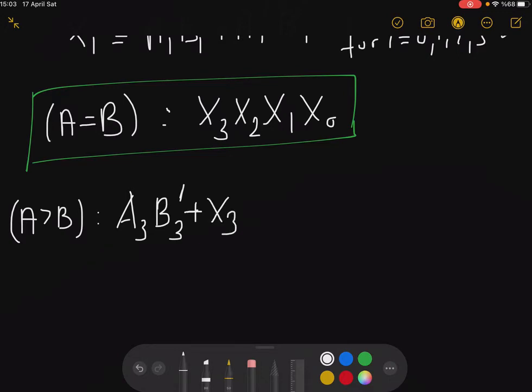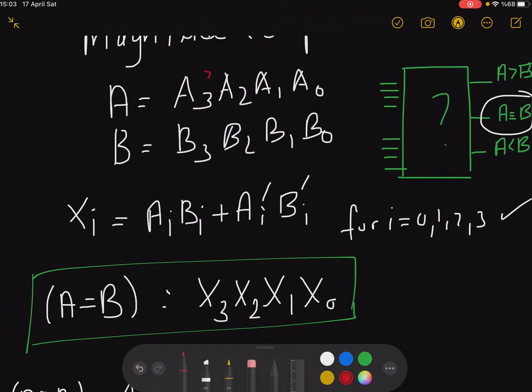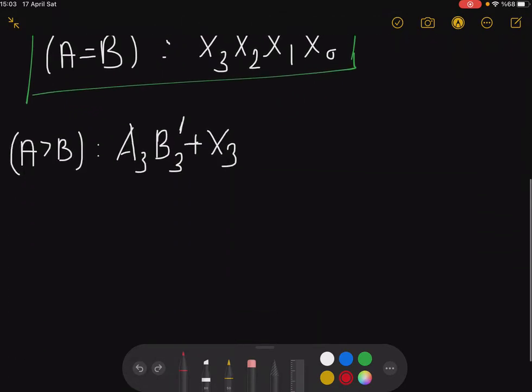Or there is another case: if they are equal, then we go ahead. If these two digits are equal then we go ahead and check the next significant digits.